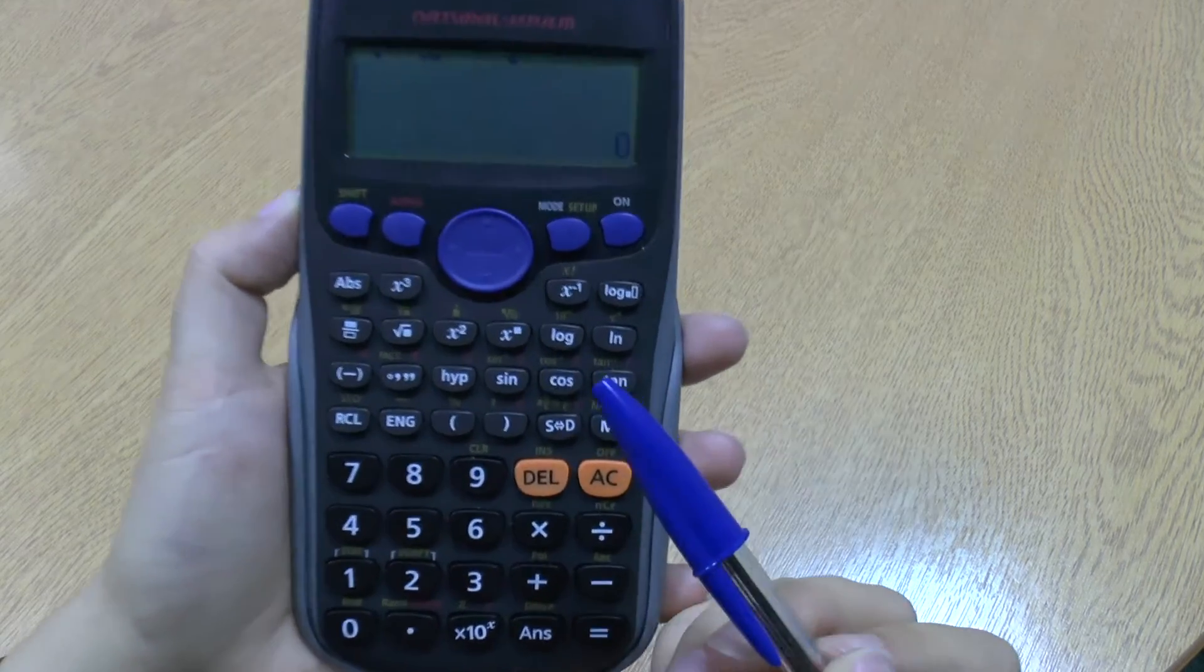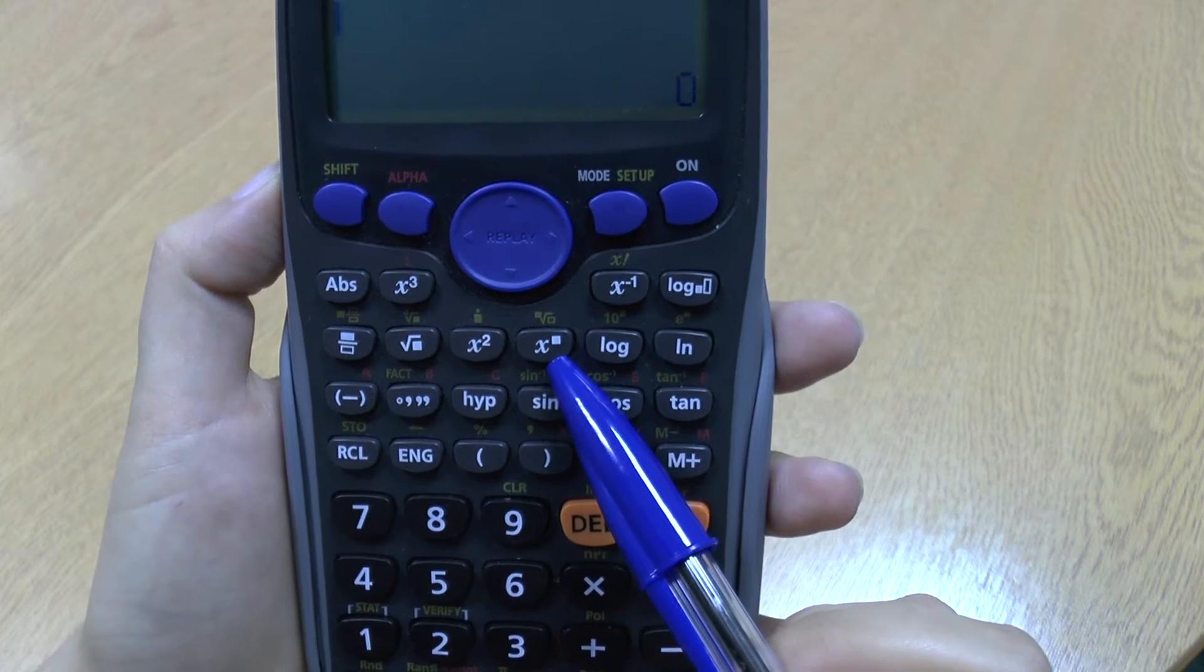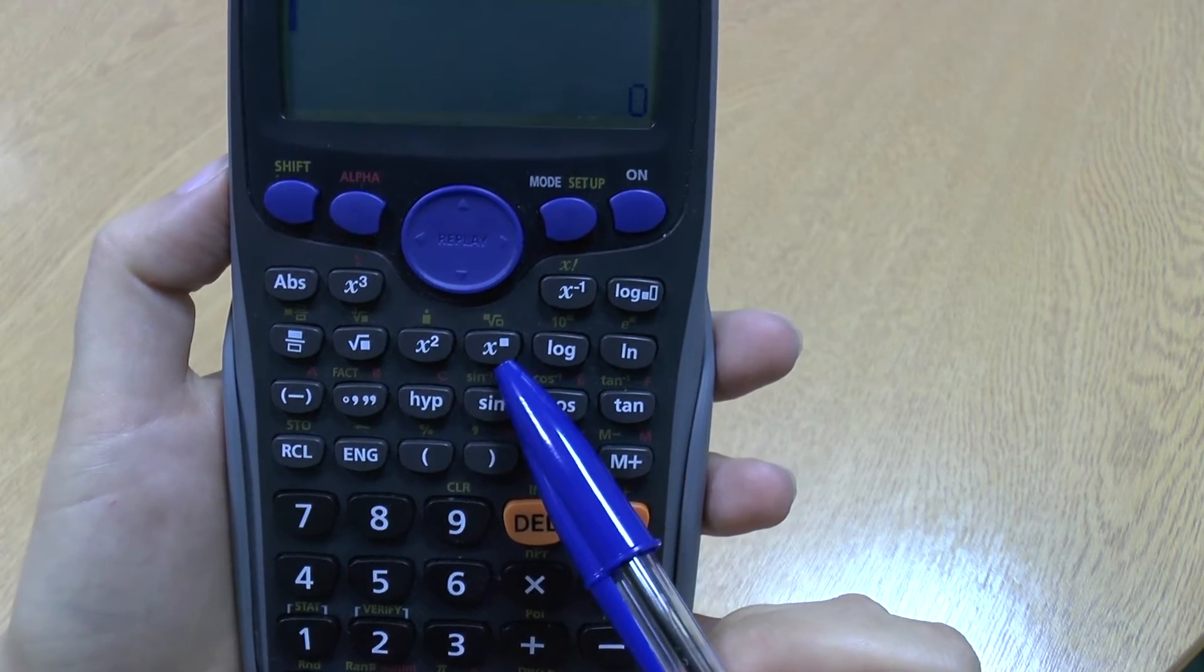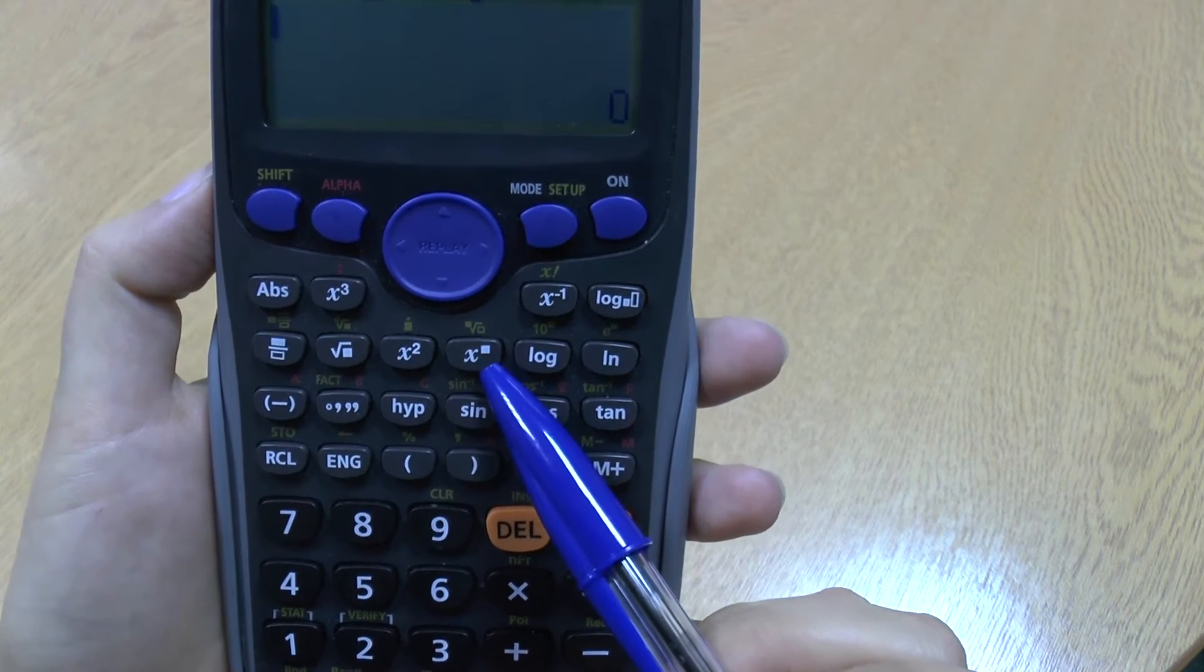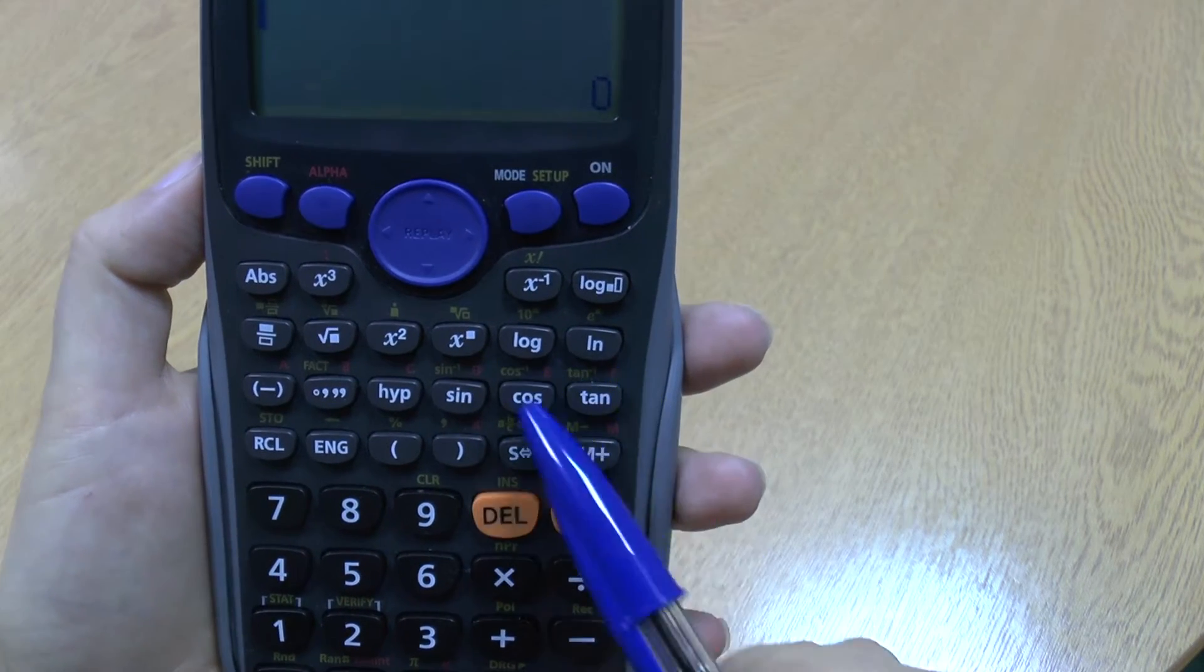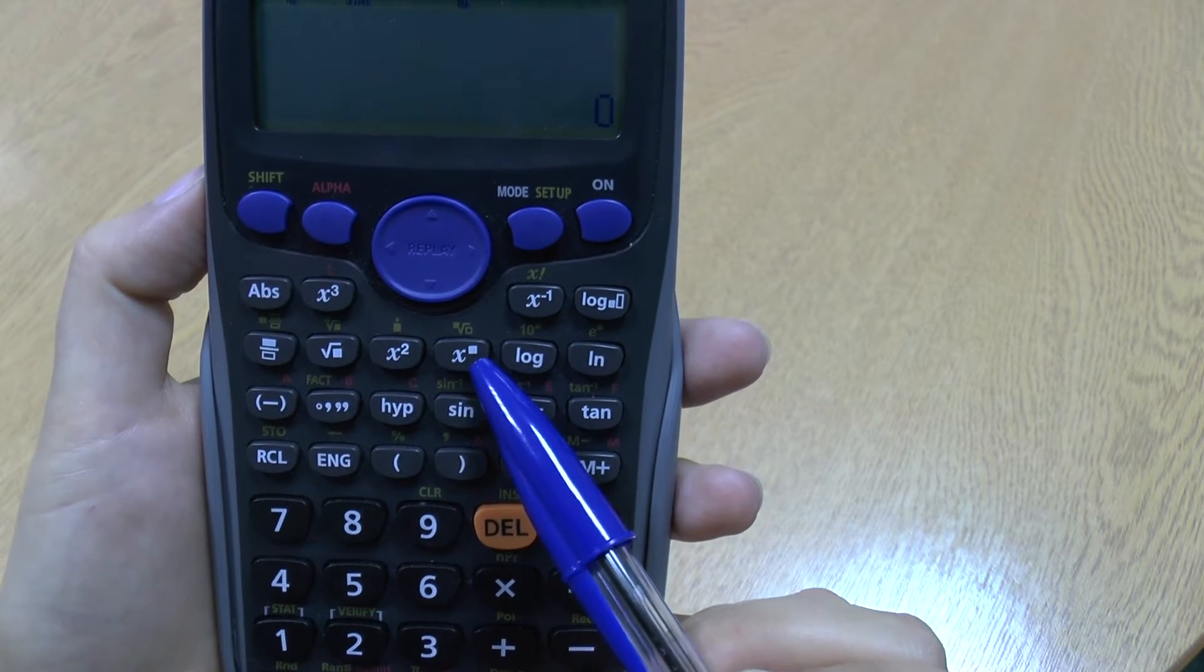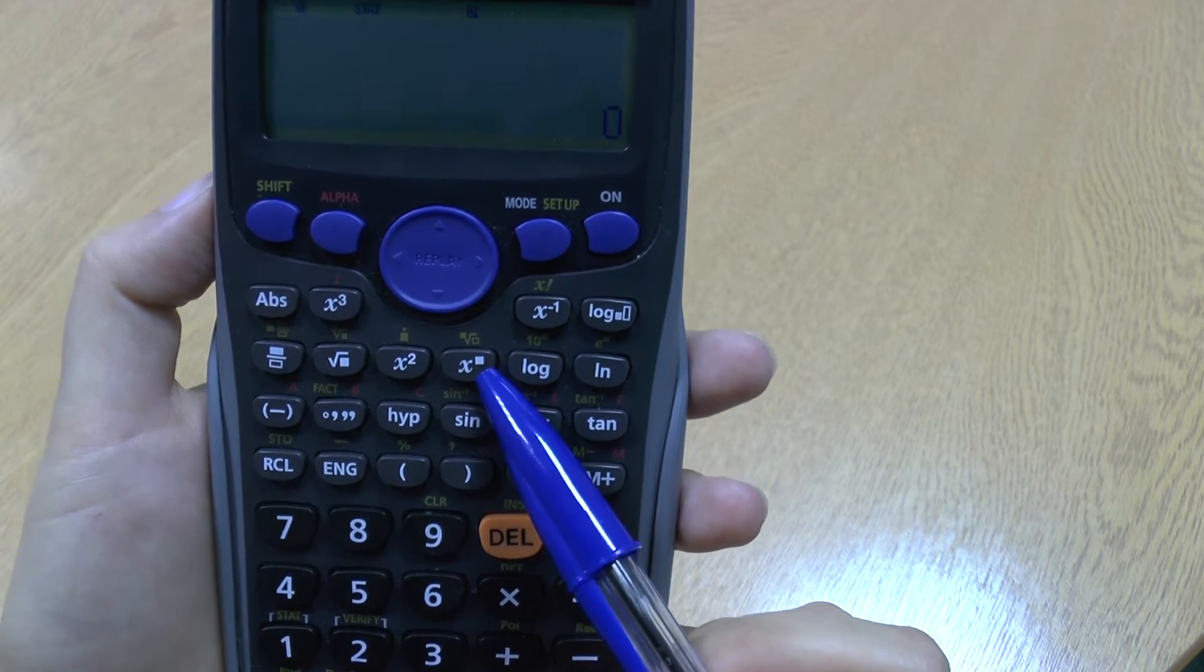It's next to the x squared. And if I zoom in, you can see it's an x with a box next to it. Now, this may vary on different calculators. That box may be not a filled-in box or it may be an n or some other symbol, but it will be roughly like this.